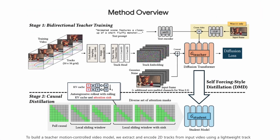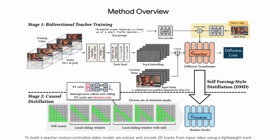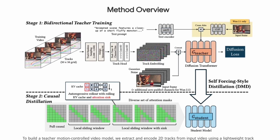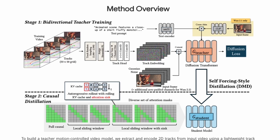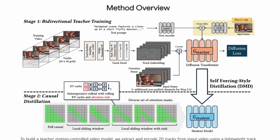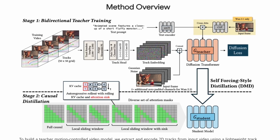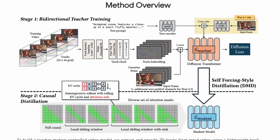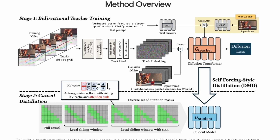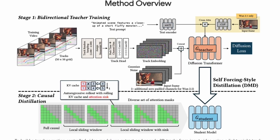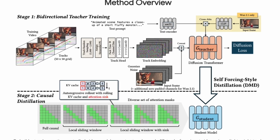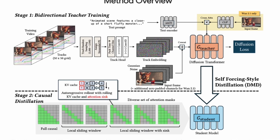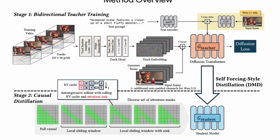Motion Stream uses a teacher-student training approach to achieve real-time performance. The teacher model generates high-quality videos but operates slowly, requiring significant processing time. These high-quality generations serve as training data for the student model, which learns to approximate the teacher's output quality while operating much faster. This distillation process transfers knowledge from the slow, high-quality model to a fast, efficient one. The student model runs in real-time, generating 29 frames per second with minimal latency.